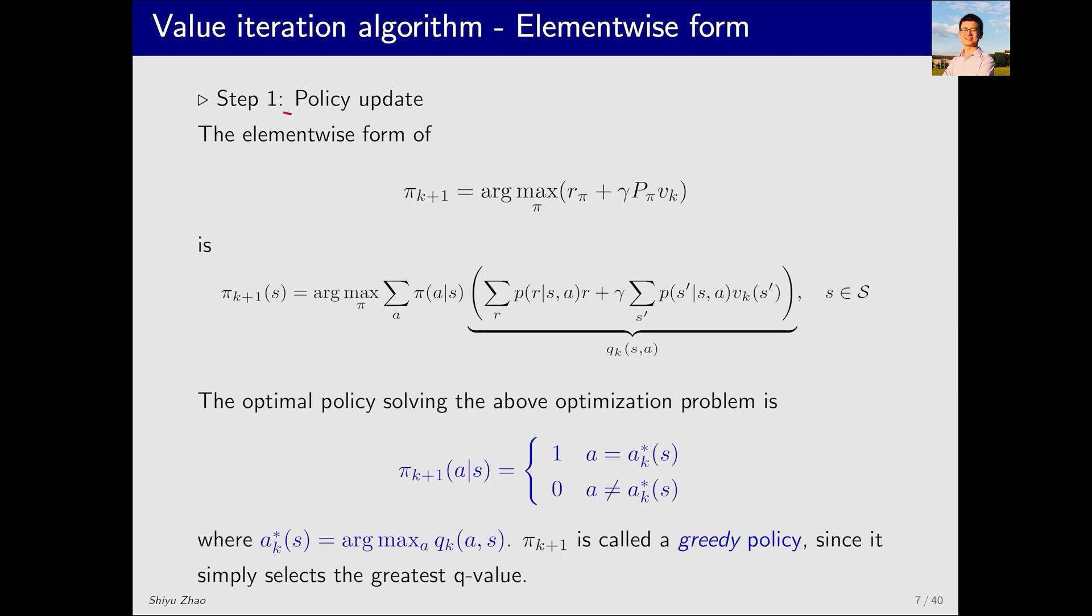Let's take a closer look at step 1, policy update. This is its matrix-vector form and I need to solve π_k+1. How exactly do I do it? In fact, for each state s, I can derive such an equation. I believe everyone is very familiar with this. The right-hand side is v_k and the preceding components are known. So, by substituting v_k, I can obtain q_k. How do we solve the optimal policy then? We have also introduced this in great detail in the previous lecture. The optimal policy will choose the action that corresponds to the highest q_k. We denote this action as a_k*. Then, the probability of all other actions is 0. Thus, this policy is a deterministic policy and it is also a greedy policy. It simply selects the greatest q-value.